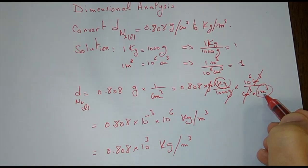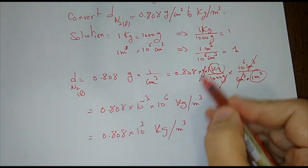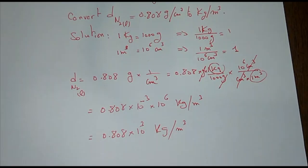So 1 meter cubed divided by 1 million - the million will go up. And as you notice, centimeter cubed will disappear. So we multiply, all units will disappear - grams, centimeter cubed - and the new units should survive.